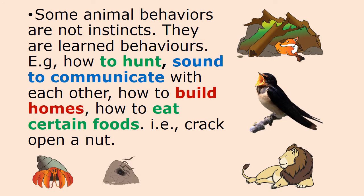There are some animal behaviors that are not instincts — they are learned behaviors. Examples include behaviors such as how to hunt, sounds to communicate with each other, how to build homes, and how to eat certain foods.